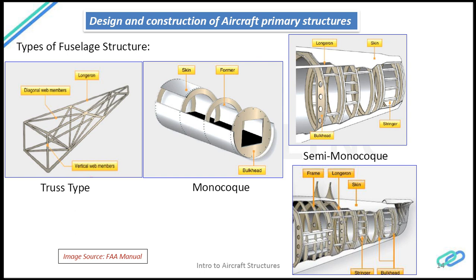If you look at the frames, they are I-section beams, or sometimes channel section beams, Z-section beams, or hat section beams. Skin panels may be metallic or composite.